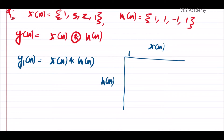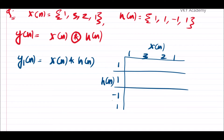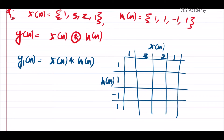The samples of x[n] are {1, 3, 2, 1} and the samples of h[n] are {1, 1, -1, 1}. Now we multiply each sample of h[n] with the input samples {1, 3, 2, 1}. The rows of products are: {1, 3, 2, 1}, then {1, 3, 2, 1}, then {-1, -3, -2, -1}, and finally {1, 3, 2, 1}.